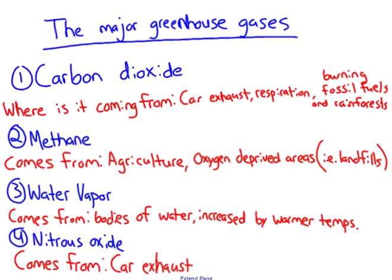Some of these greenhouse gases have probably been talked about a lot. Carbon dioxide is the most commonly discussed one — it comes from car exhaust, from cellular respiration (you breathe out CO2 all the time), from burning fossil fuels, and from burning rainforests. Another form of carbon is methane. Methane is produced from oxygen-deprived areas — an example would be a landfill, where huge mounds of garbage have no oxygen underneath, so methane is produced.